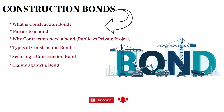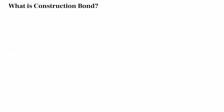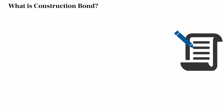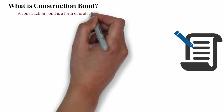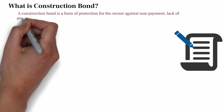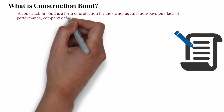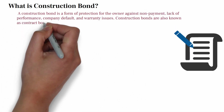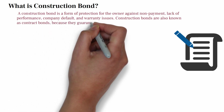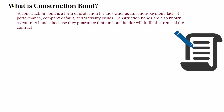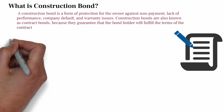With all that being said, let's get into this video. A construction bond is a form of protection for the project owner against non-payment, lack of performance, company default, and warranty issues. It is also known as a contract bond because they guarantee that the contractor will fulfill the terms of the contract.